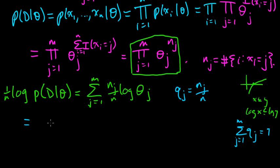So we can rewrite this thing as sum from j goes from one to m, q_j log theta_j.